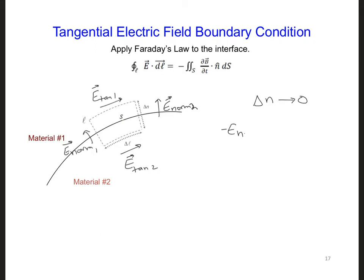So minus E norm 1 times delta n plus E norm 2 times delta n will go to zero. And so we are left with minus E tan 1 times delta l plus E tan 2 times delta l.